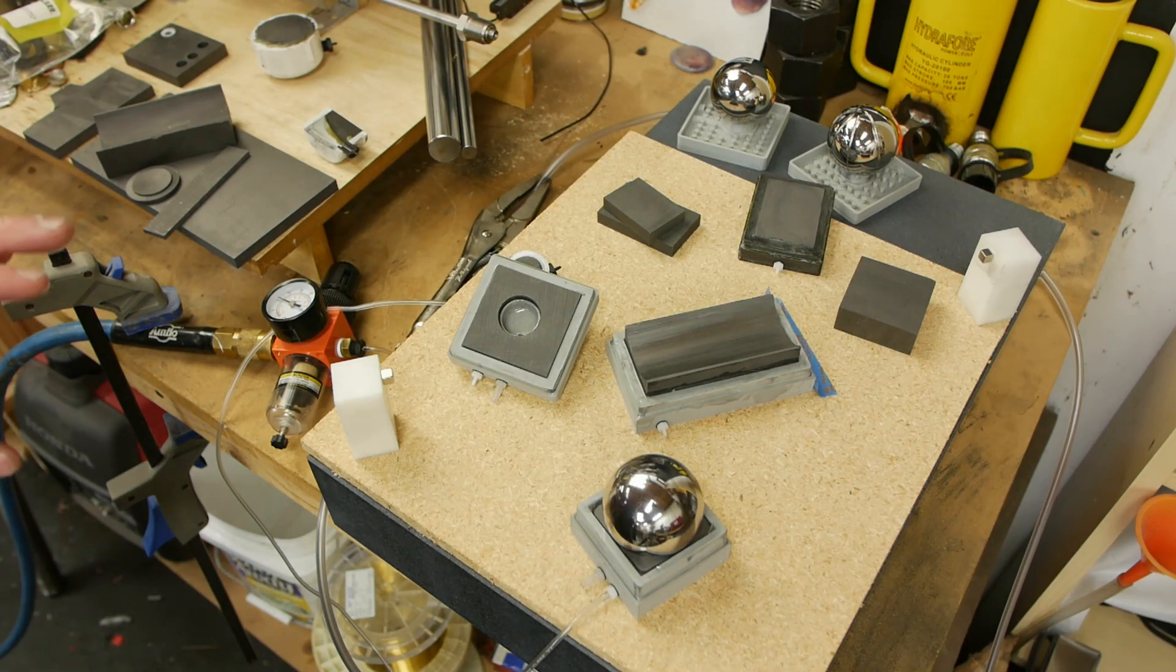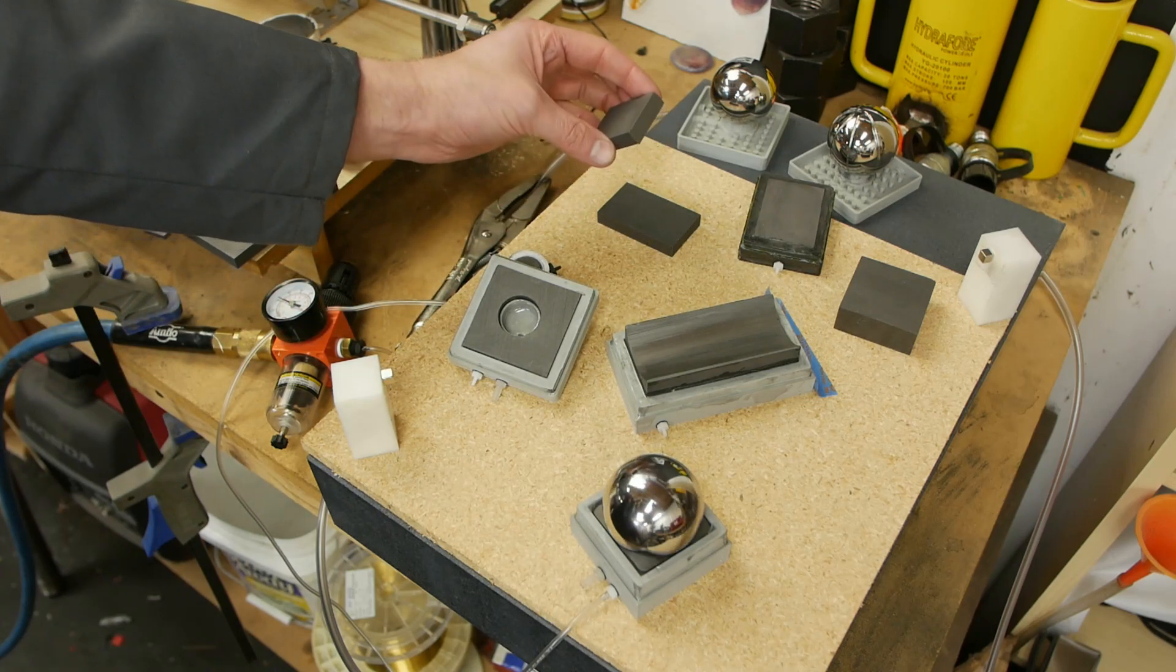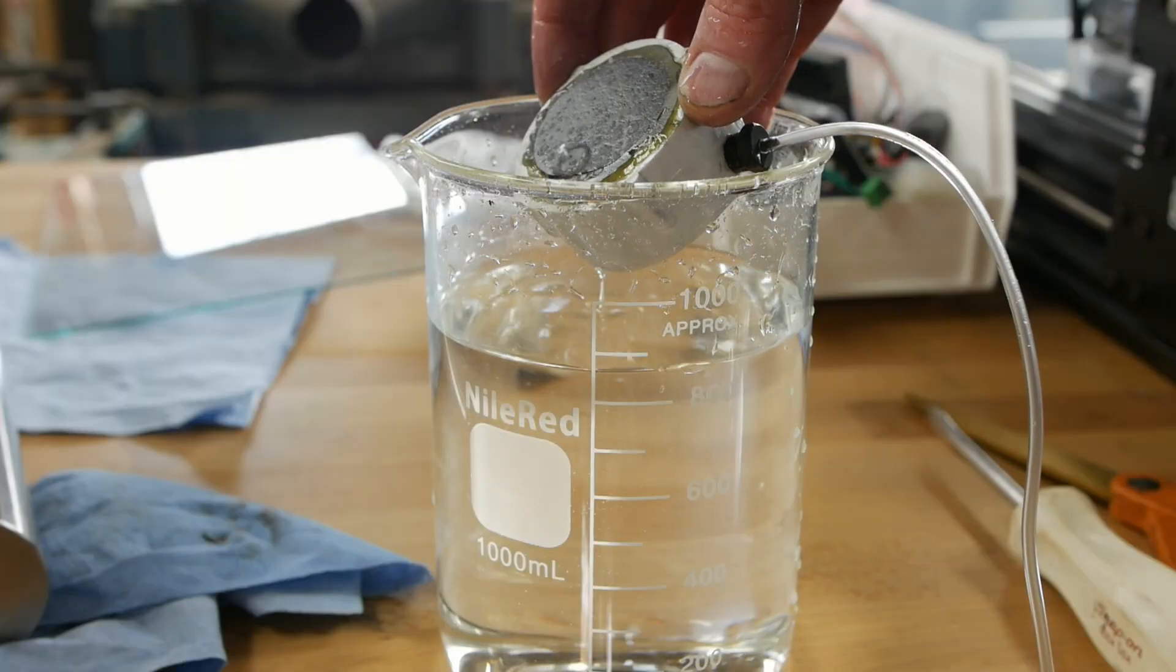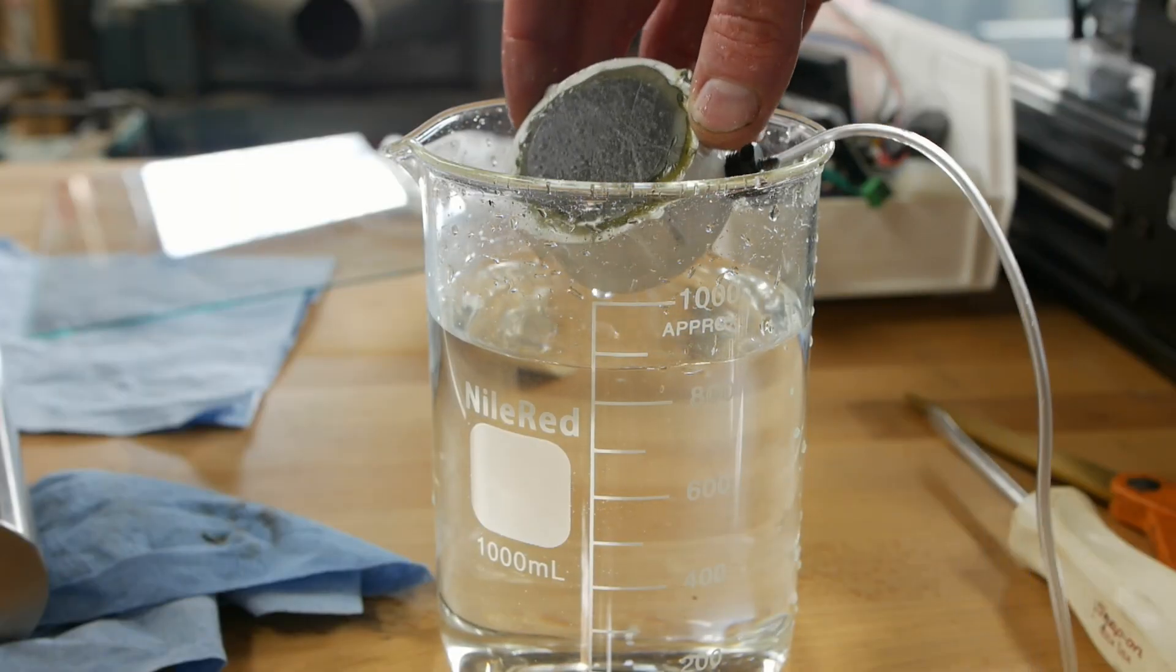The key here is we're going to be talking about graphite air bearings. The magic material here are big chunks of graphite and the reason that we use this is because it's porous. Even though it looks like a solid piece it really is only about 85 percent there, 15 percent open void.